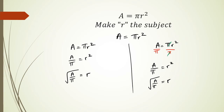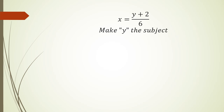In maths, when someone asks you to make something the subject, you should write r on the left hand side. These two things are equal so you can just switch them — r = √(a / π). For example, just like 3 + 2 = 5 can also be written as 5 = 3 + 2.